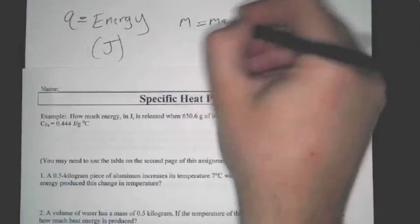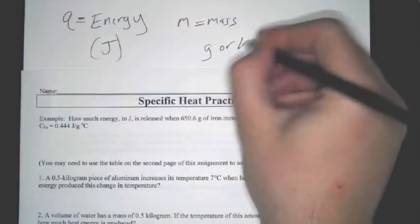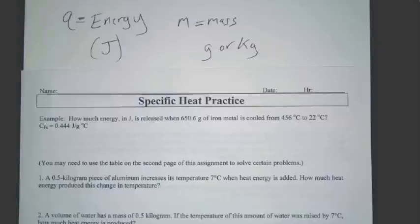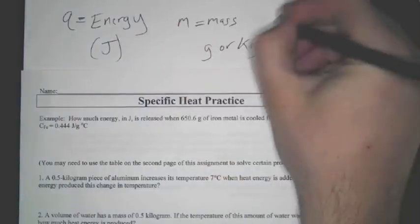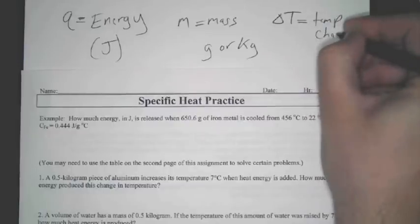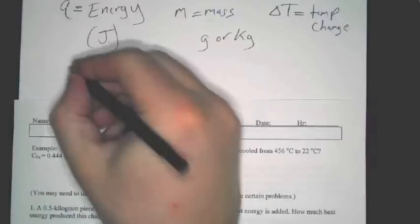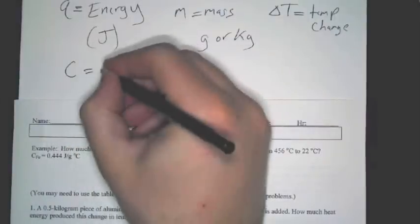M is our mass, and that will usually be measured in grams or kilograms. It depends. Today it will be a lot of kilograms, but it's also in grams a lot. Delta T is our temperature change. I mean, I'm just making sure we know this. That one's pretty straightforward. And then the last thing, C, whatever our C is, will be our specific heat.